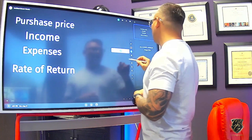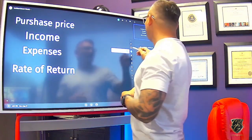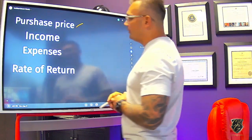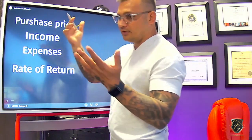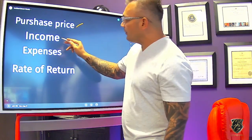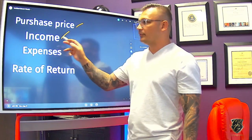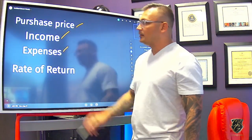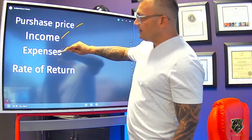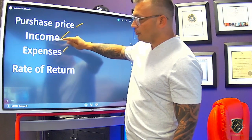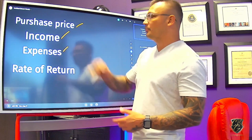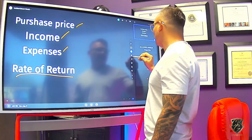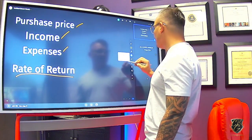There are three main components. We have the purchase price — whatever you bought the property for. Then we need to figure out the monthly rental income. From there we need to figure out the expenses. We take income minus expenses to get our total, then divide that number by the purchase price, which gives us our rate of return.